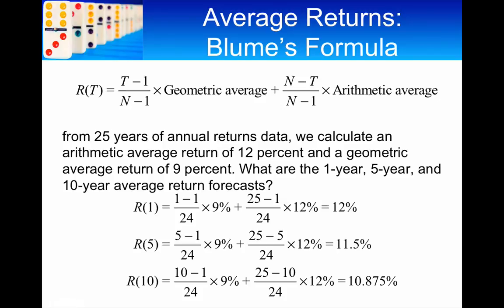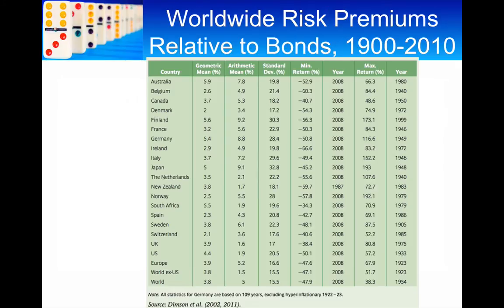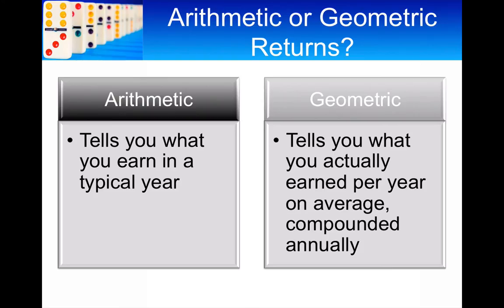You wouldn't use it for looking backwards, because if you're using the arithmetic or the geometric, and you ask a question, what is the typical amount you earn in each year? You would use the arithmetic return, average return. If you were saying, well, okay, what is the amount you earned on average, compounded annually? So, you're really looking at value effects, then you'd use the geometric return.